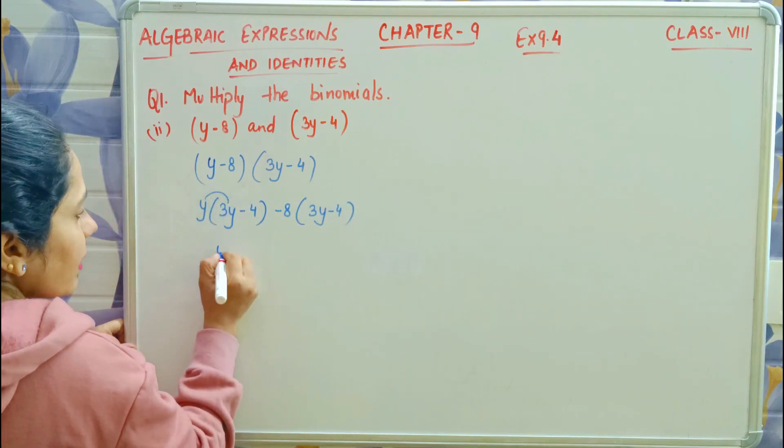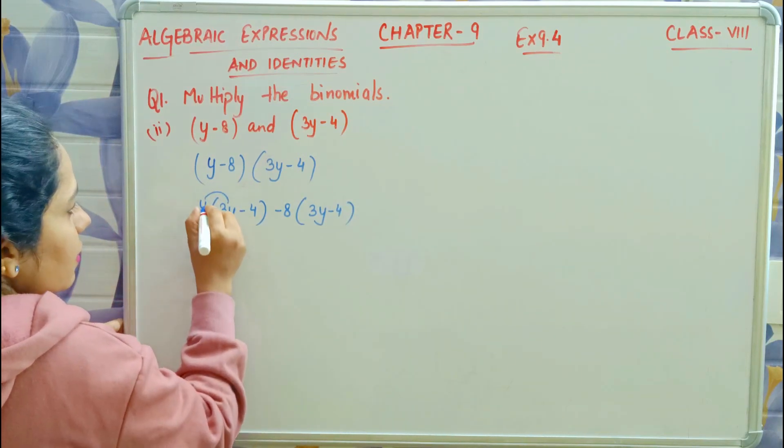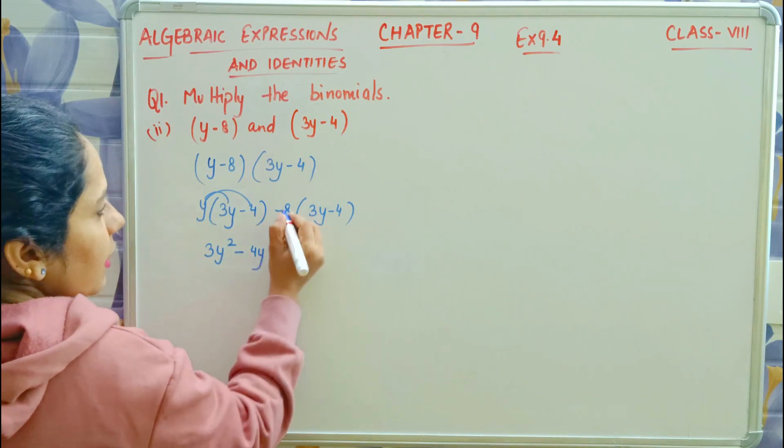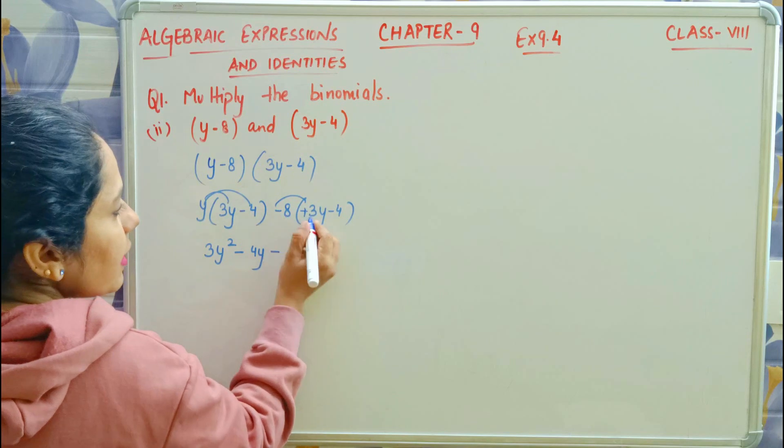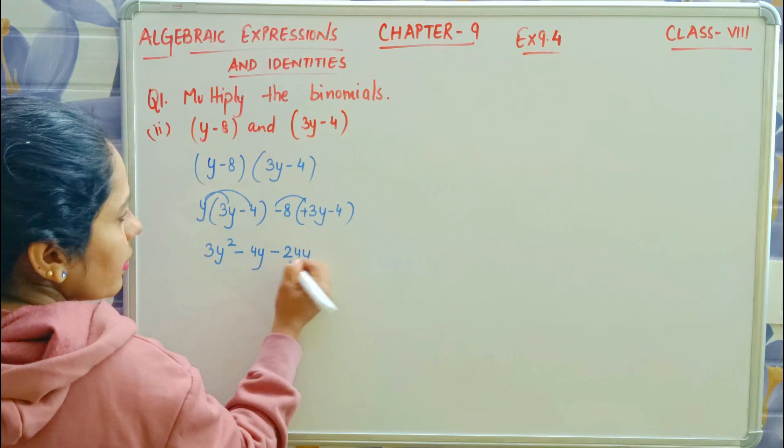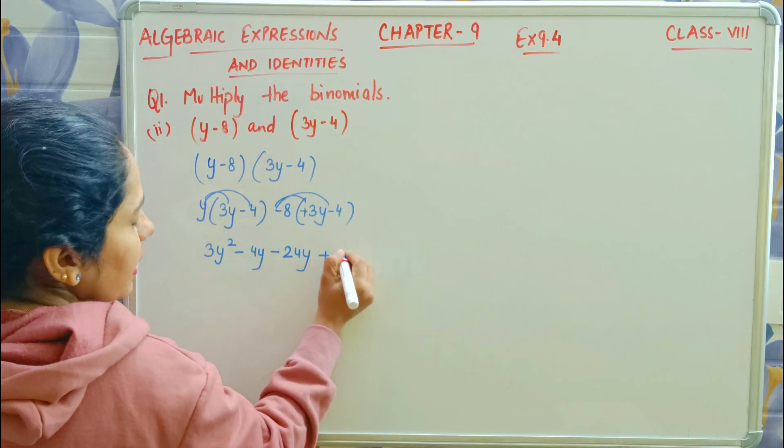Now y times y is y squared, times 3 as it is. y times 4 is 4y. Now pay attention, minus is here, no sign means plus. Minus, plus, minus, plus. 8 times 3 is 24y. Minus, minus is plus. 8 times 4 is 32.